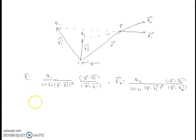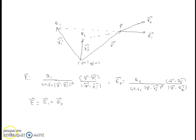From the principle of superposition, the electric field at point P when both charges q1 and q2 are present is given by E1 plus E2. This is due to the principle of superposition, and the resultant electric field is the vector sum of E1 and E2.